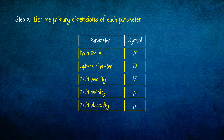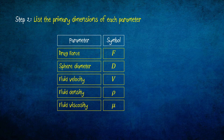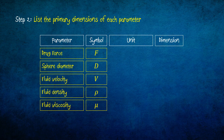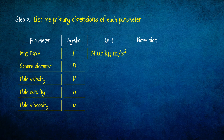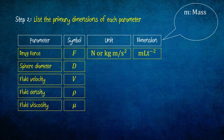Step 2 consists of listing the primary dimensions of each parameter. To analyze the dimension of our equation, it is helpful to make a list of dimensions of each parameter. The unit for drag force is newton, or kilogram meter per second squared. Then the dimension for the drag force is MLT to the power negative 2, where M represents mass, L represents length, and T represents time.